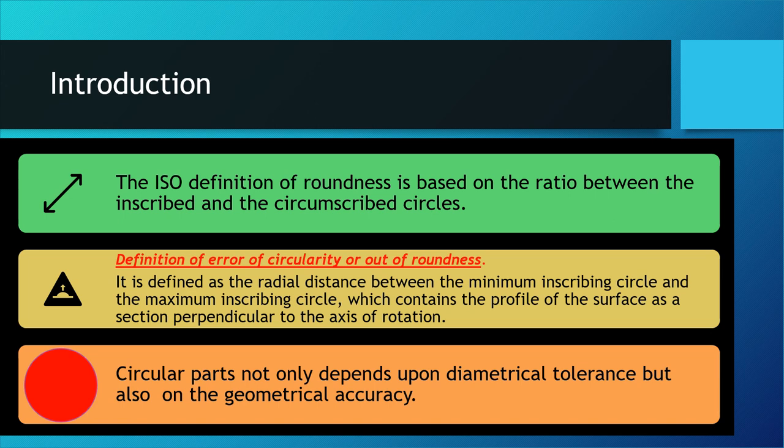The error of circularity, or out-of-roundness, can be defined as the radial distance between the minimum inscribing circle and the maximum inscribing circle which contains the profile of the surface, such as a section perpendicular to the axis of rotation. Circular parts not only depend on diametrical tolerance but also on geometrical accuracy. The characteristics of roundness greatly depend upon the method of generation.